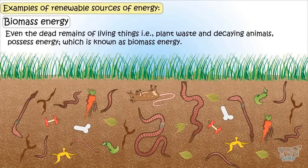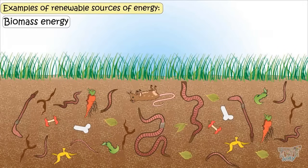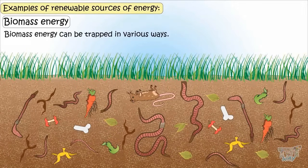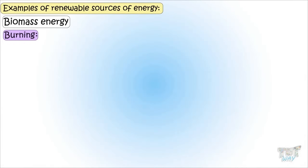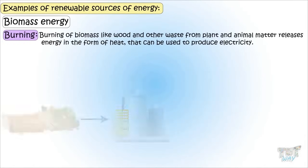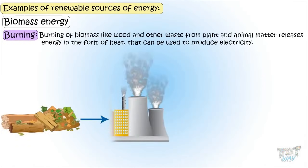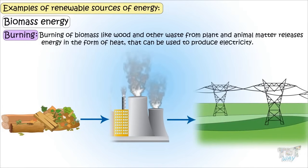Even the dead remains of the once living things possess energy. Plants, waste, and dead decaying animals all have stored energy in them, which is known as bioenergy. And this biomass energy can be trapped in various ways. Burning of biomass like wood and other waste from plant matter releases energy in the form of heat that can be used to produce electricity.